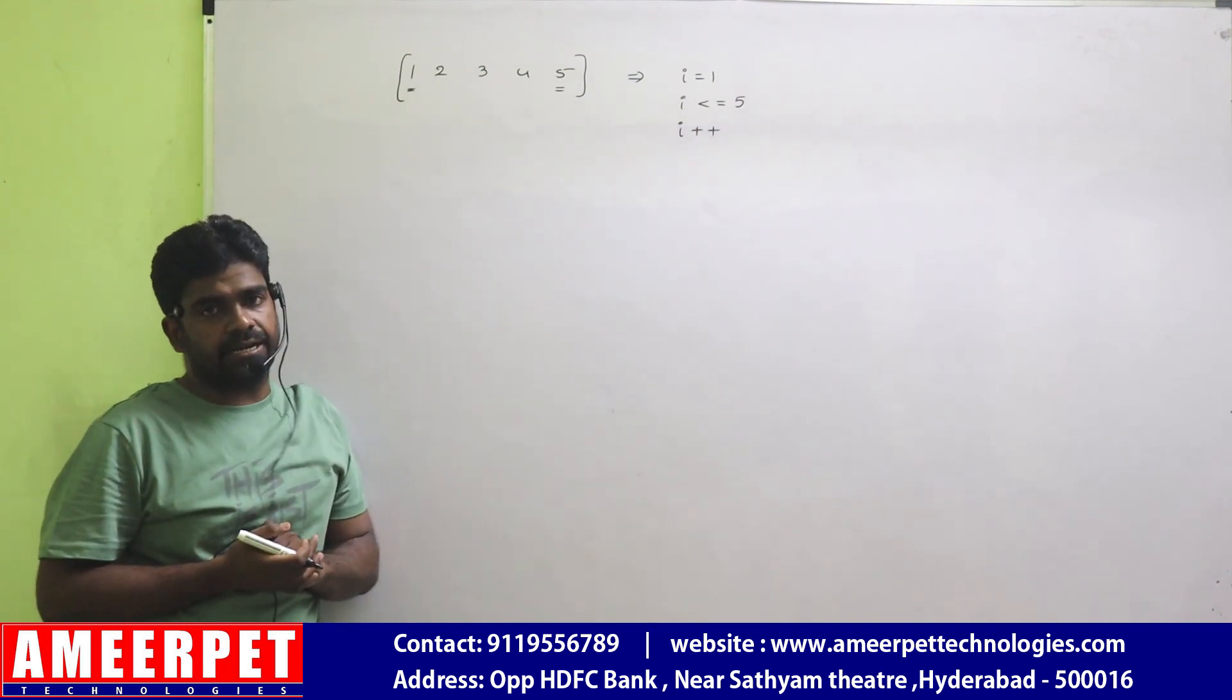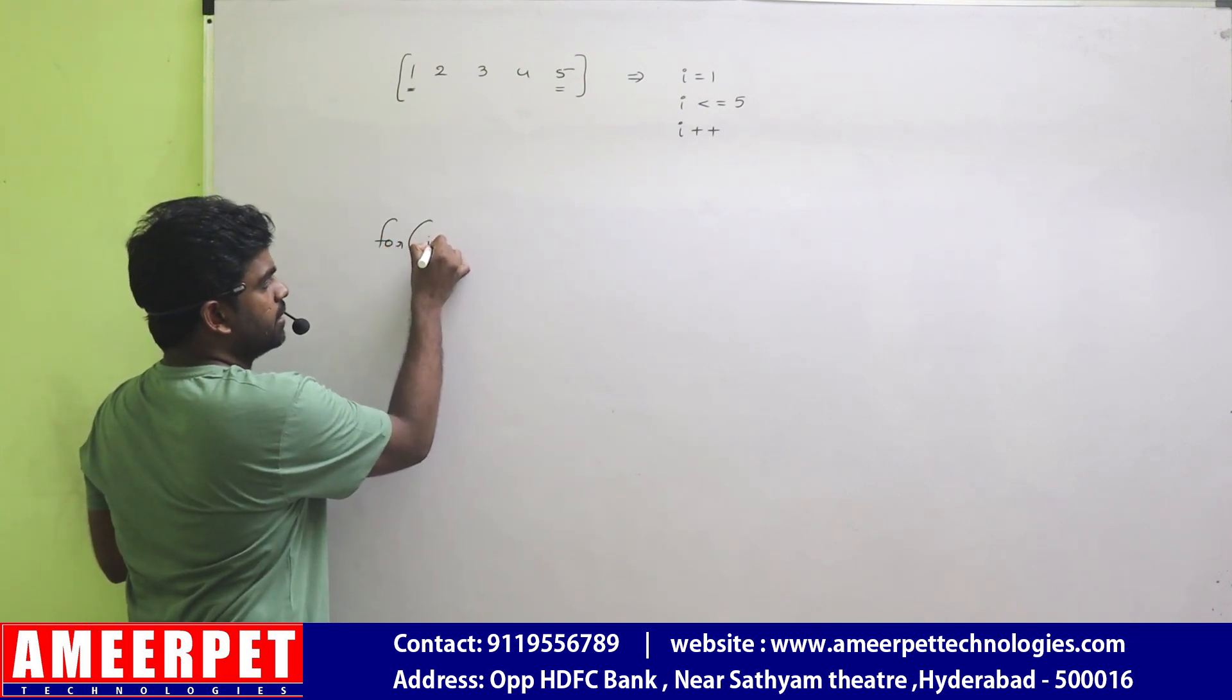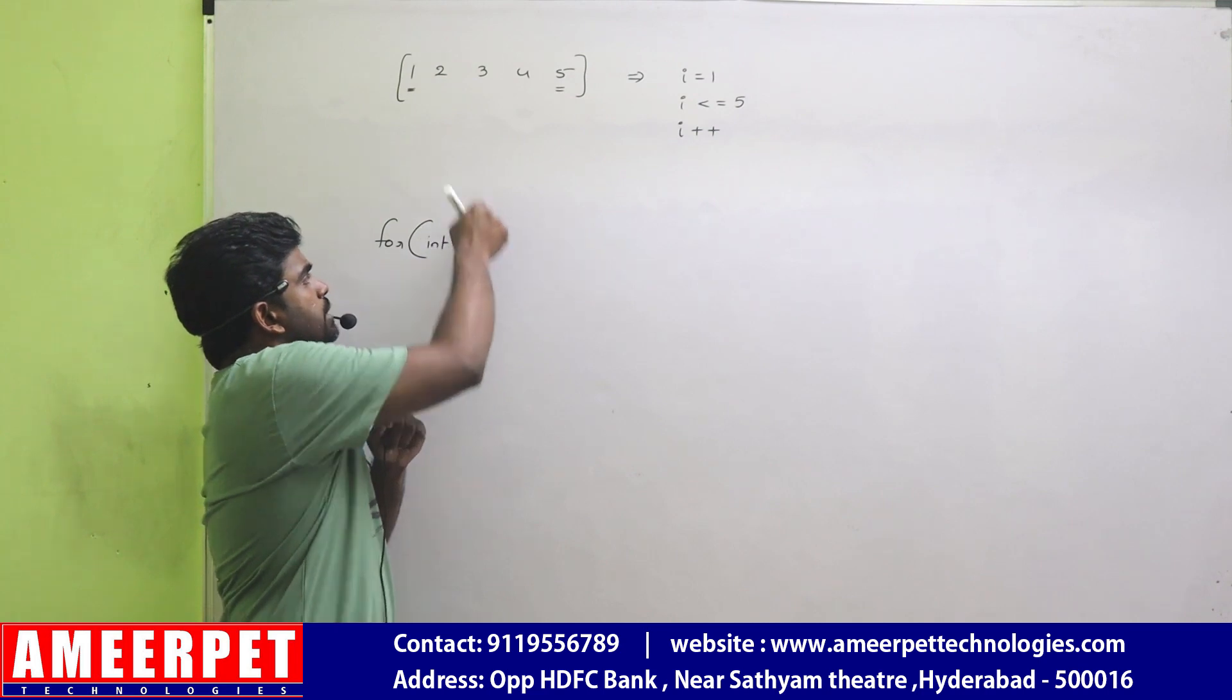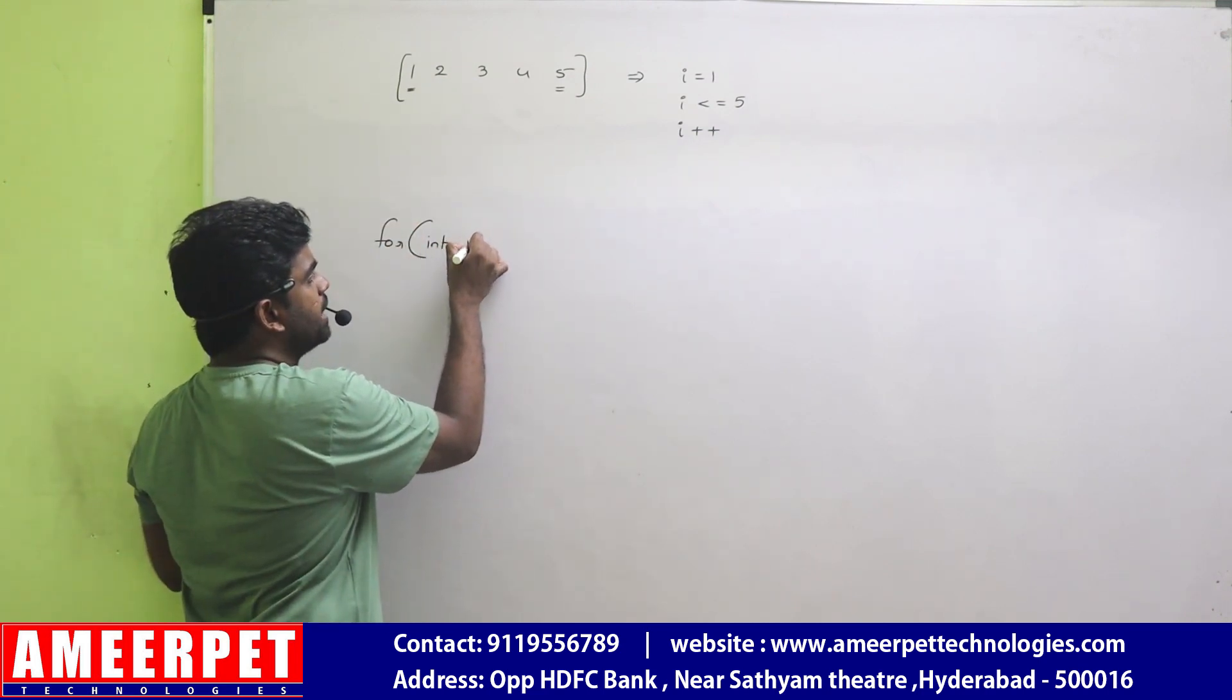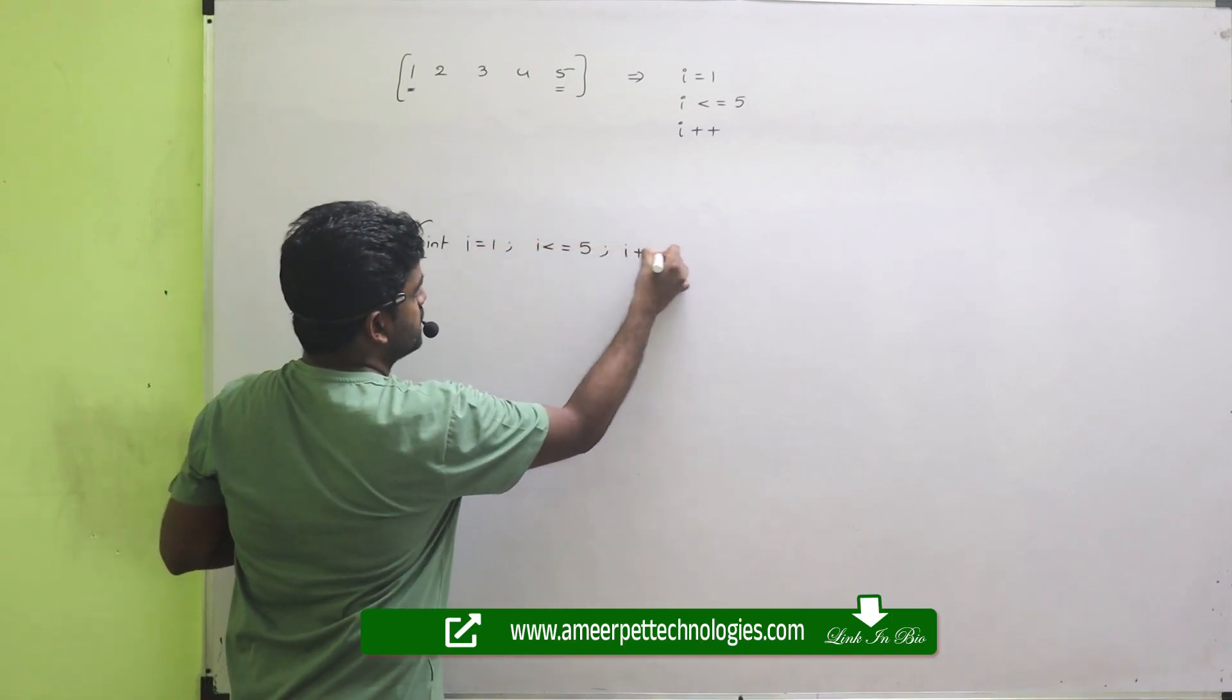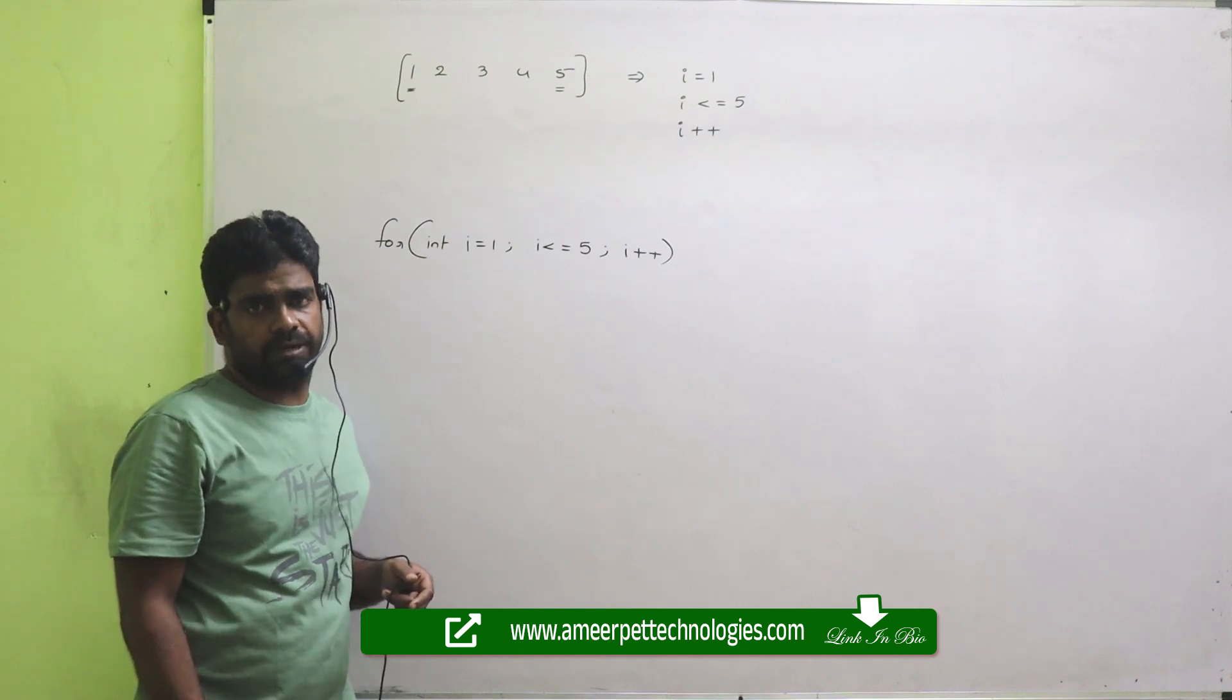Now I am writing everything inside the loop. We are just writing for integer. If it is Java or .NET you can directly specify int. If you are using C language, just write it outside as int, no problem. Int I equals to 1, I less than or equals to 5, I plus plus. All the three we are just writing one after another separated with a semicolon. Simple one.